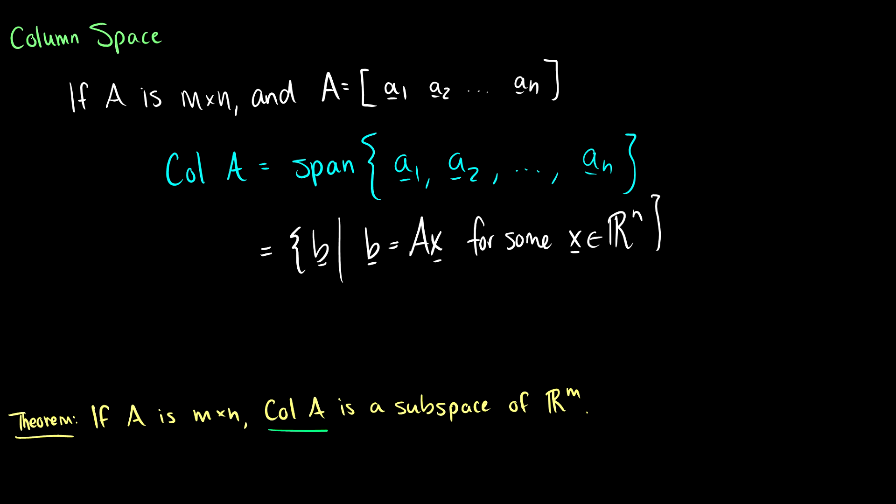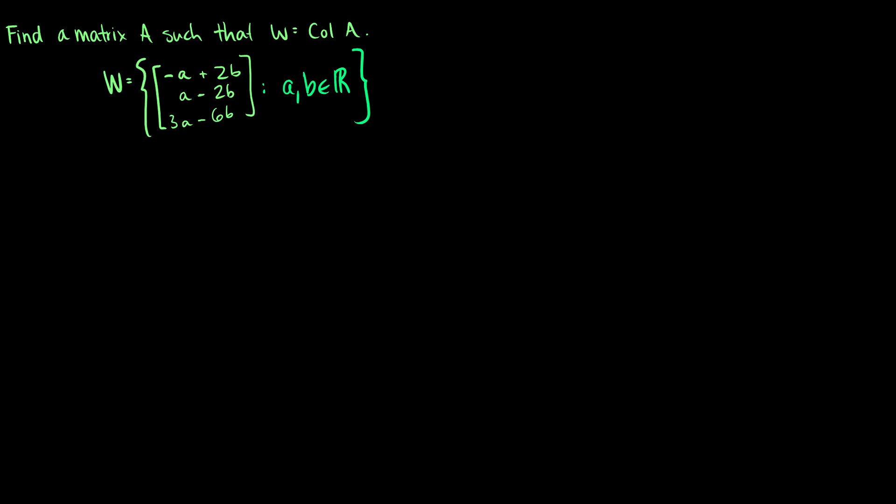Okay, so given that we can do some application questions. So we have to find a matrix A such that W is equal to the column space of A. So we have W here and it's equal to a set of matrices. So negative A plus 2B, A minus 2B, 3A minus 6B for all AB in the real numbers.